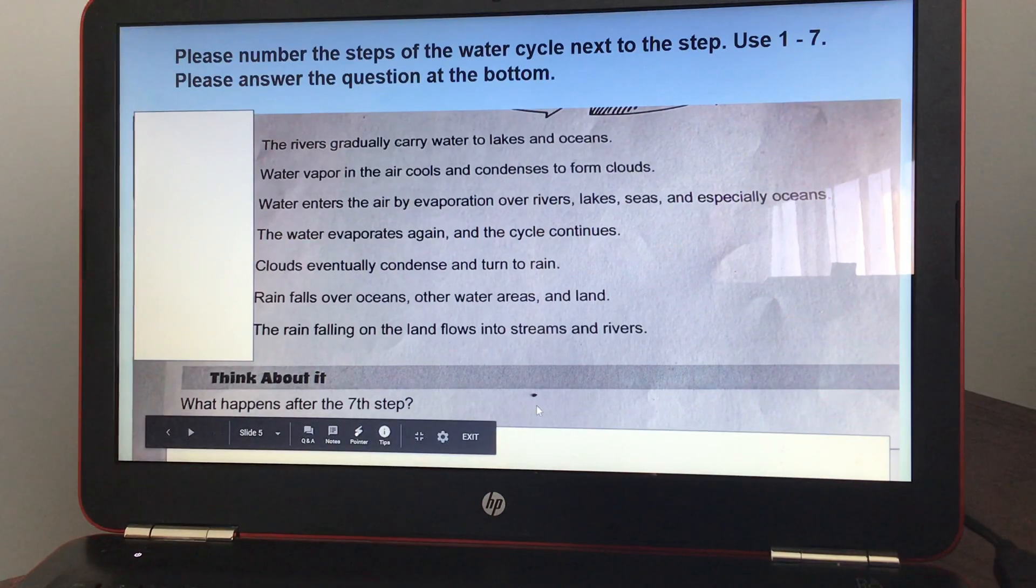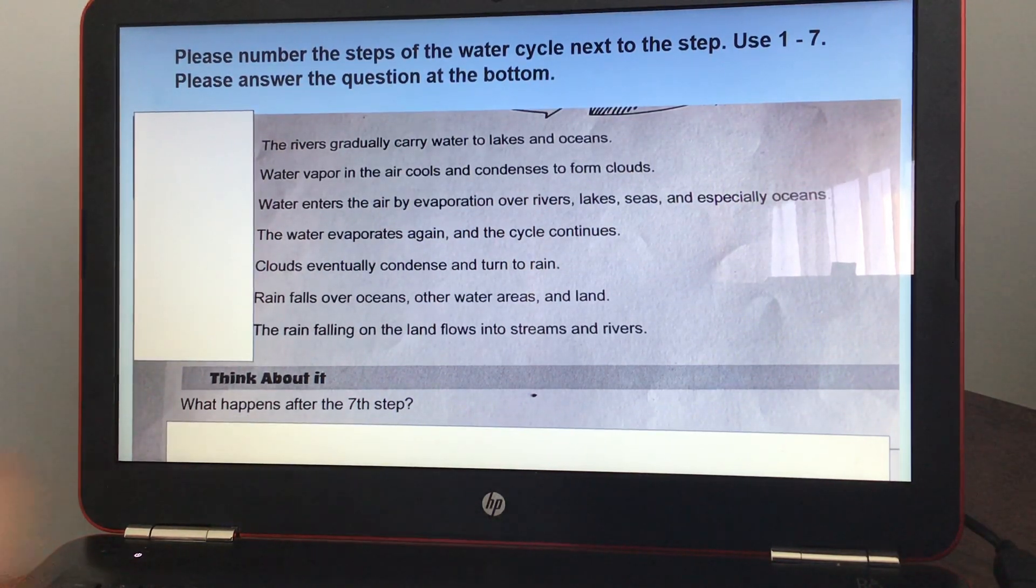And number seven should be the water evaporates again and the cycle continues. The bottom, it asks you a question, what happens after the seventh step? And you say that, or you should have said that, the cycle repeats itself. That number one starts again and starts all over.